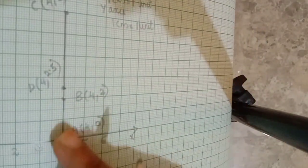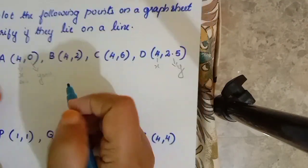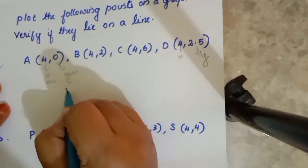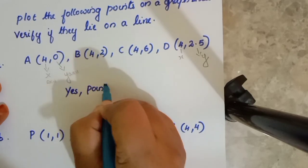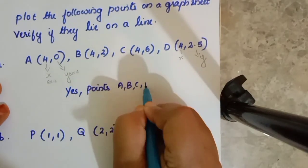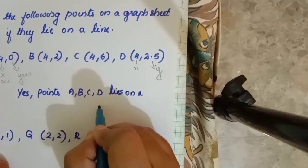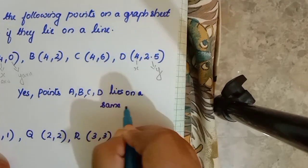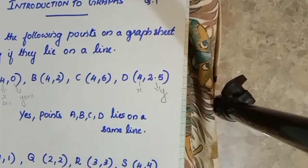The points lie on the same line. Yes, they lie on the same line. Points A, B, C, D lie on the same line. That is the same line. We can see that we can verify it. Now we will see the next question.